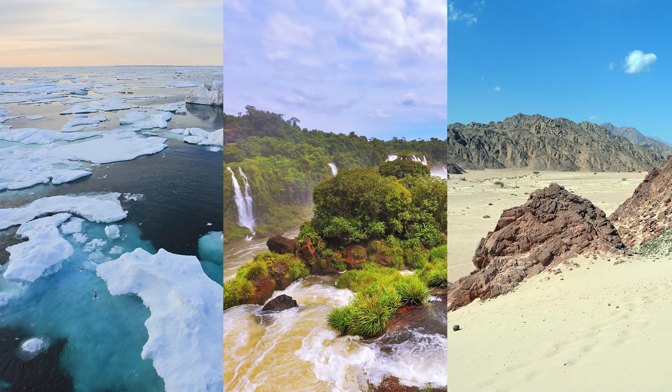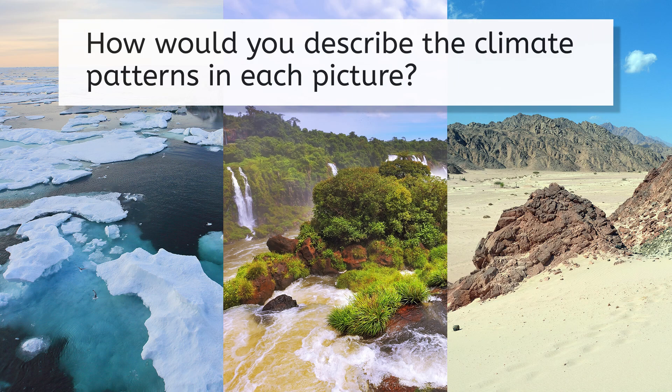Let's take a minute and look at some different ecosystems. How would you describe the climate patterns in each area? Think about the amount of precipitation, average temperatures, and sunlight in each location. Pause the video here and record your thoughts.